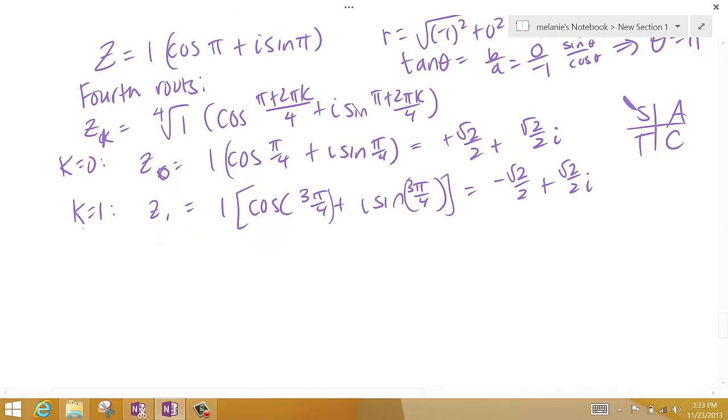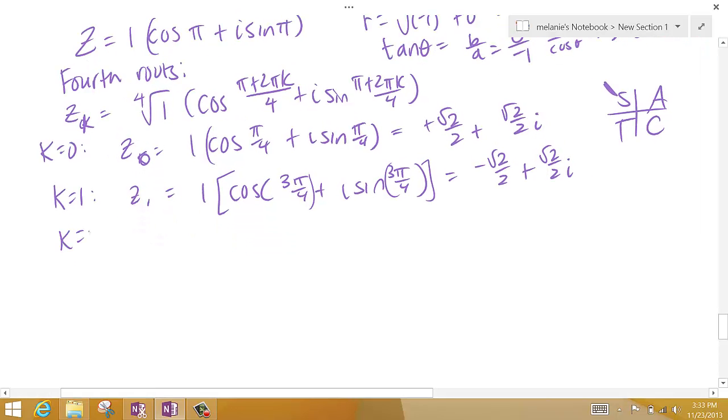When k is 2, if I plug a 2 in here, I get 2 times pi. So I have pi plus 2 times 2 pi. So that's 4 pi plus another pi, I get 5 pi over 4, plus i sine 5 pi over 4. And now I'm in quadrant 3, so both are negative.